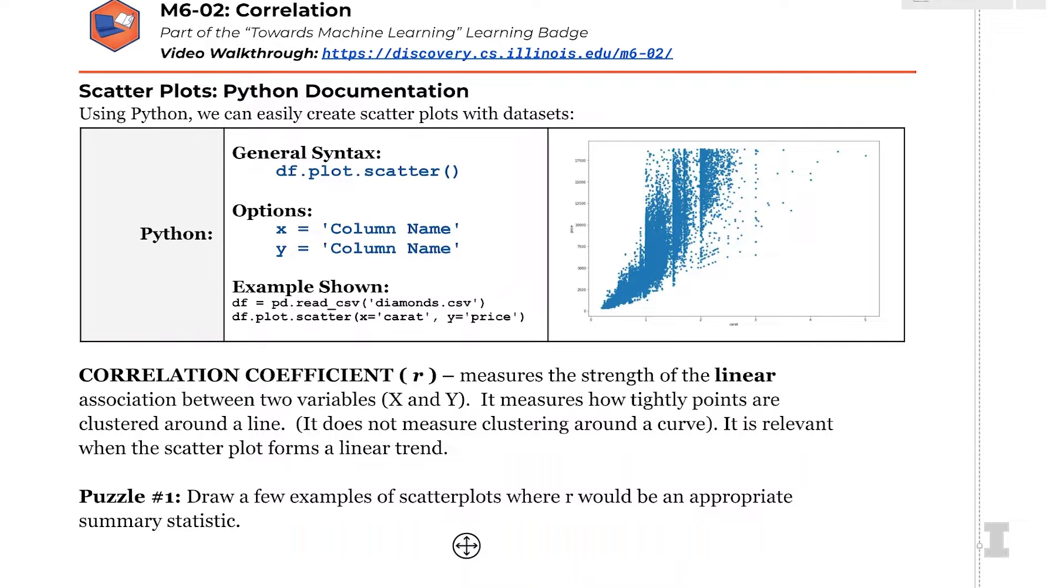We'll dive into it more in a bit, but the diamond data set is a classic data set that has over 50,000 diamonds and variables about all the different characteristics of the diamond. This includes the x, y, and z size of the diamonds, as well as things like the table, which is the amount of the diamond you see on the face of the diamond. And the most important variable, the price and the weight.